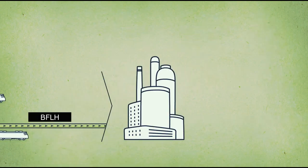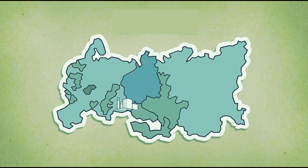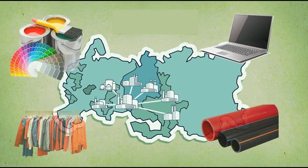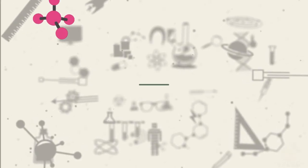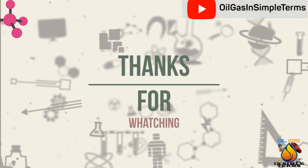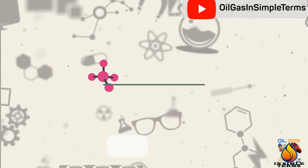BFLH is a valuable mixture of different substances that need to be divided into separate components. It is sent to nearby petrochemical plants to produce a wide range of products including plastics, clothes, paints, laptops, phones, and many other things which surround us in everyday life. Thanks for watching this video — please subscribe if you found it interesting.